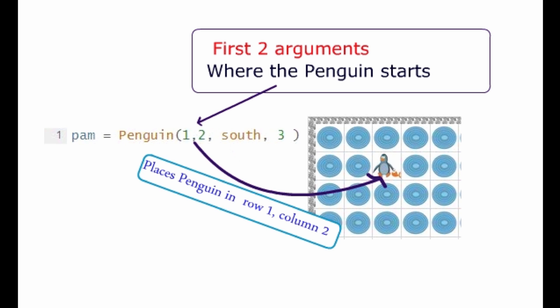So we see some arguments here, we see 1, 2, south, 3, four arguments set off by commas that change that starting location and direction of pam.